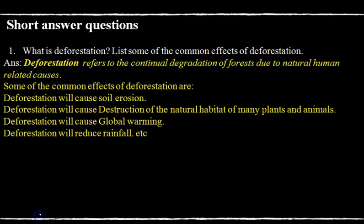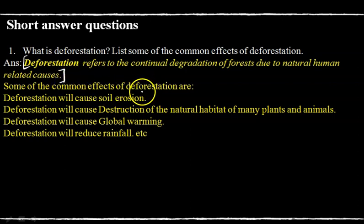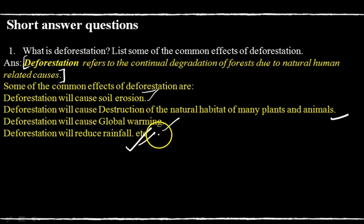Short answer questions: What is deforestation? List some common effects of deforestation. Deforestation causes soil erosion, destruction of the natural habitat of many animals and plants, global warming, reduced rainfall, and many other effects — so we write 'etc.' because there are many effects of deforestation.